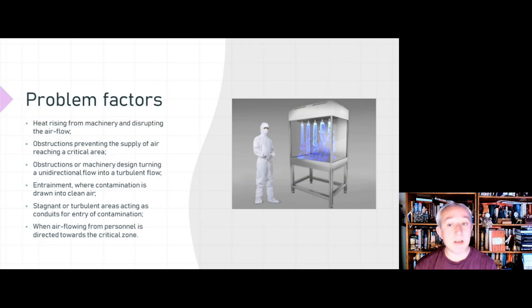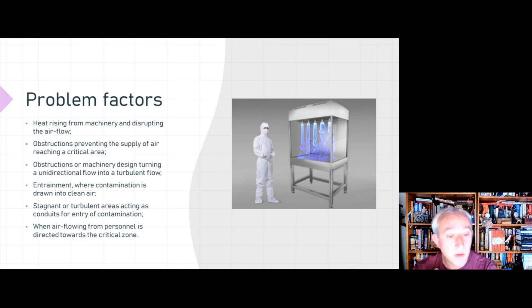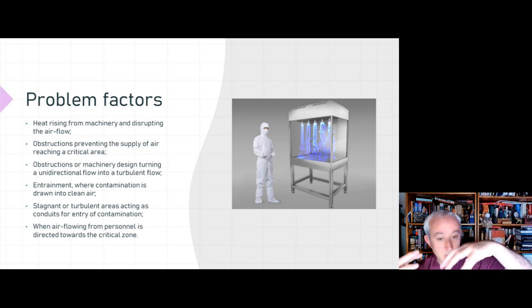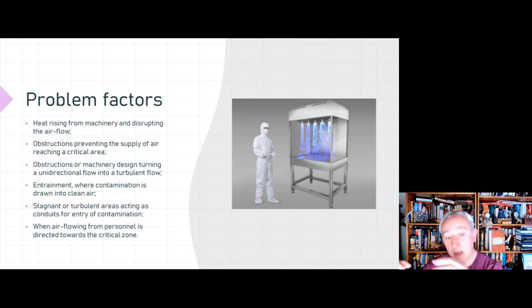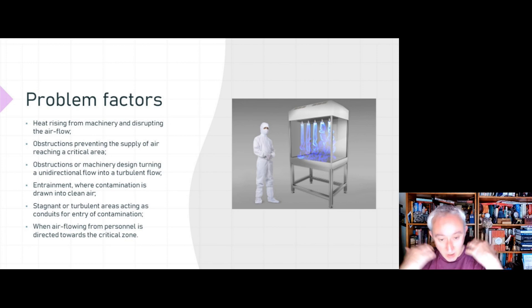Problems can arise when conducting airflow studies. Heat rising from machinery can disrupt airflow — opening a hot autoclave, for example, can cause significant disturbance. Obstructions can prevent air supply from reaching critical areas, or turn unidirectional flow into turbulent flow. Entrainment can bring contamination into the clean air zone, and stagnant or turbulent areas can act as conduits for contamination entry. When a person intervenes in the critical zone, we don't want to see air rolling off the person and being directed into the critical zone — the air should still flow over the person and out.